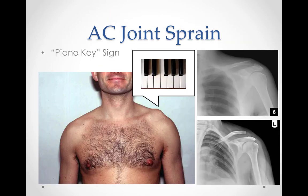The piano key sign is a key clinical feature of an AC joint separation, also known as the spring test. During the test, the patient is sitting with the involved arm relaxed at the side. The examiner applies pressure to the patient's distal clavicle in an inferior direction. A positive test occurs with depression of the clavicle when pressure is applied and elevation of the clavicle when pressure is released, much like a piano key does when pressed.